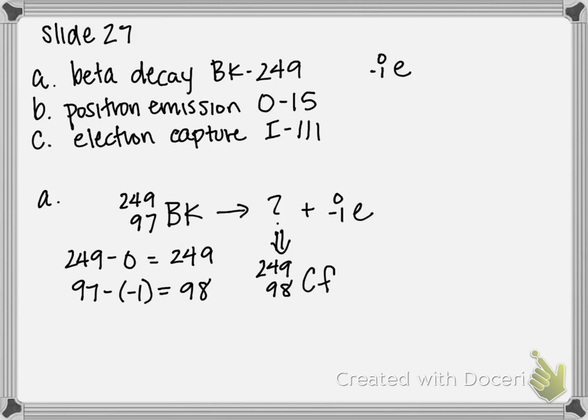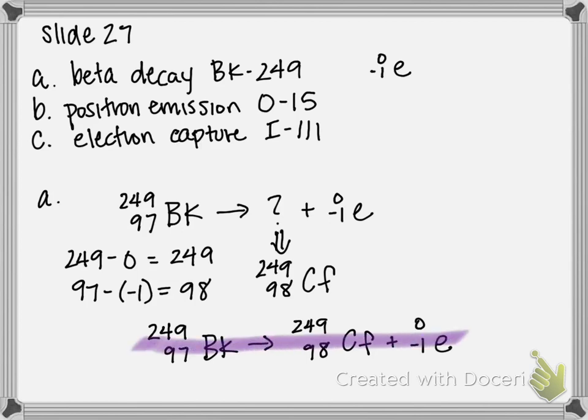This one was also synthesized in the labs at UC Berkeley. So yeah, another interesting tidbit. So your final equation for this, 249 over 97 Bk gives you 249 over 98 CF plus 0 over negative 1 E. So that is 4A, that's your final equation.